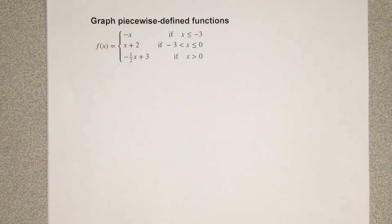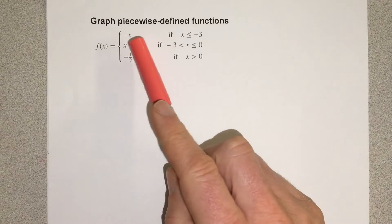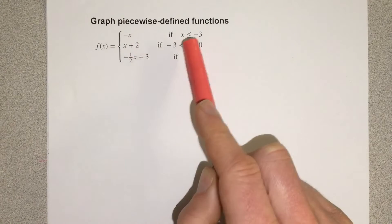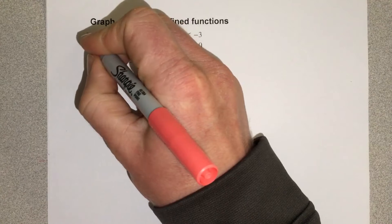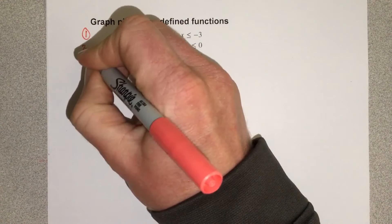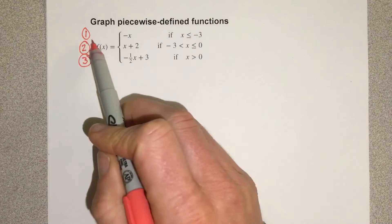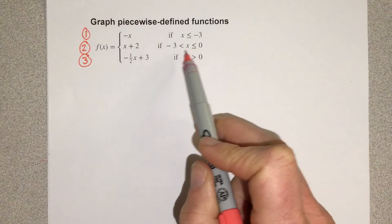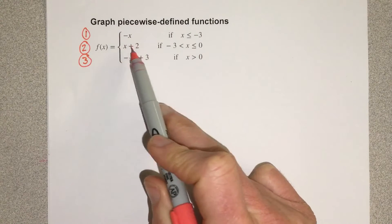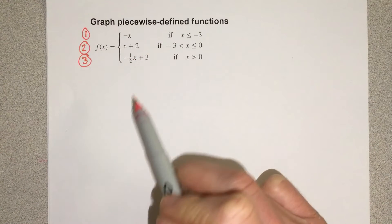In this video we're going to graph piecewise defined functions. They give you a function with three different functions and domain values. I would write one, two, and three out to the left of the function so that this domain goes with the negative x function, this domain goes with the x plus two function, and this domain goes with the negative one-half x plus three function.